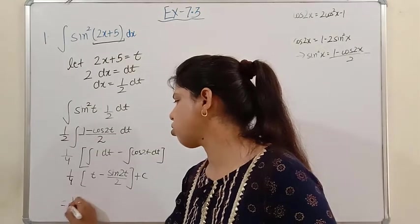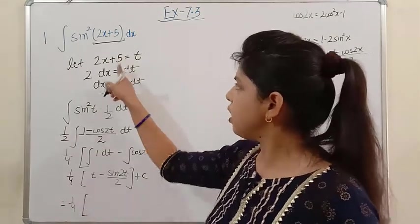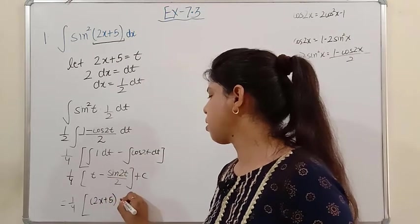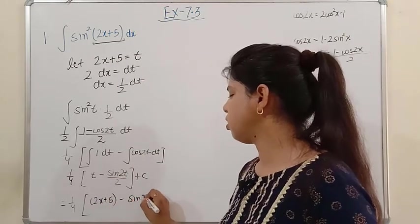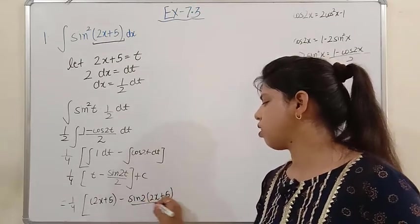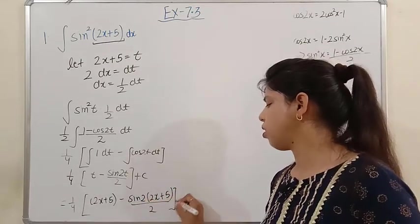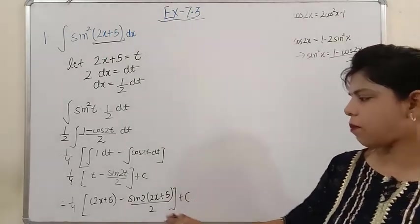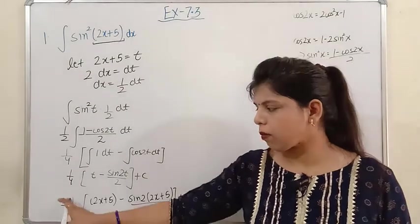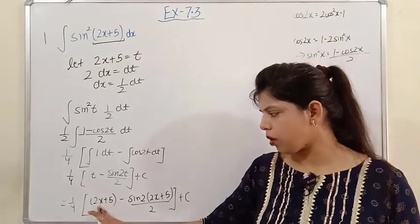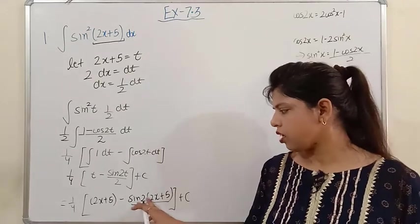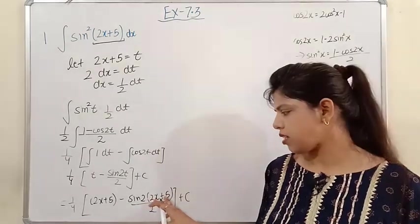Finally, substitute back t = 2x+5. Our answer is (1/4)[t − sin(2t)/2] + C, which becomes (1/4)[(2x+5) − sin(2(2x+5))/2] + C. You can open and simplify this: (2x+5)/4 − sin(4x+10)/8 + C. Please note it down.